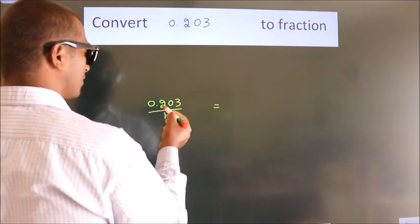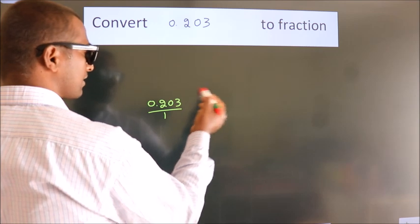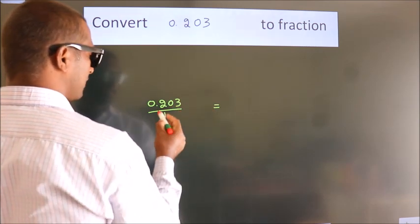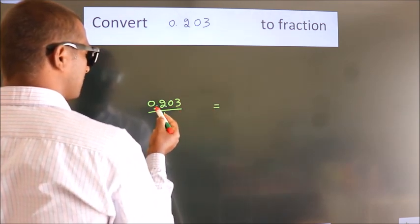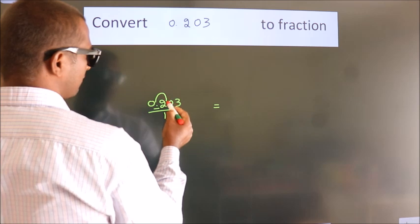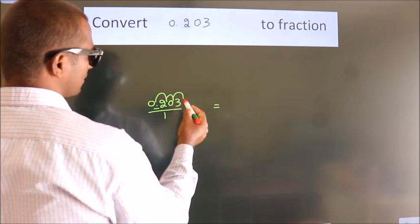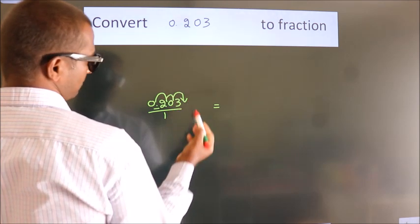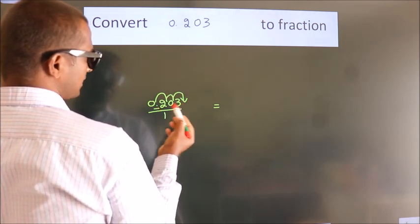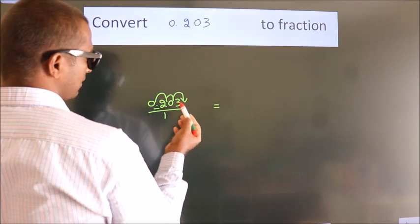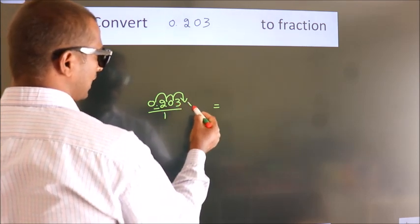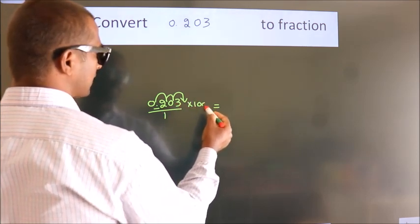To convert this to a fraction, we have to move this decimal after 1, 2, 3 numbers. To move this decimal after 3 numbers, for that we have to multiply it with 1000.